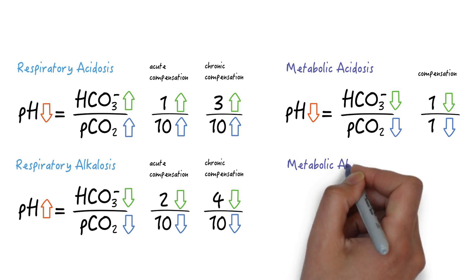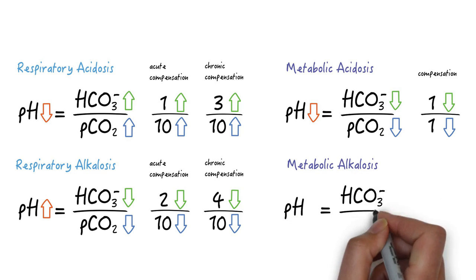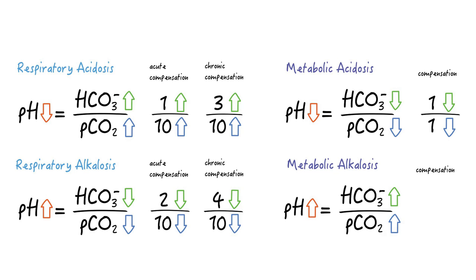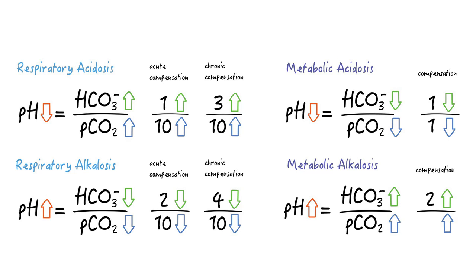In metabolic alkalosis we also don't discriminate between acute and chronic problems since the lungs adapt immediately. The bicarb goes up and the pH will go up too, so the patient will start to hypoventilate in order to correct the pH. There is a certain limit as to how much the patient can hypoventilate, so this type of compensation is somewhat limited. For every two-unit increase in bicarb the pCO2 will increase by one unit.